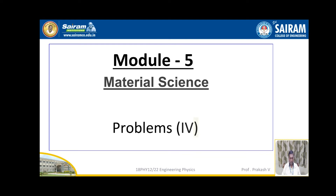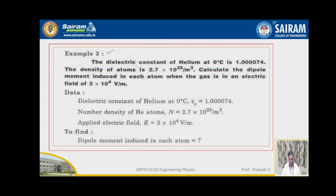The first problem: the dielectric constant of helium at 0 degrees centigrade is 1.000074. The density of atoms is 2.7 × 10²⁵ per meter cube. Calculate the dipole moment induced in each atom when the gas is in an electric field of 3 × 10⁴ volt per meter.